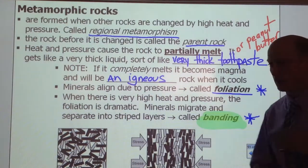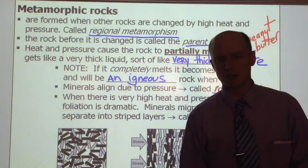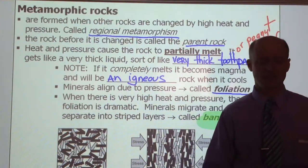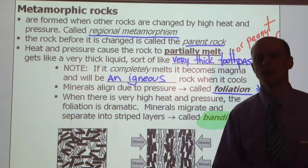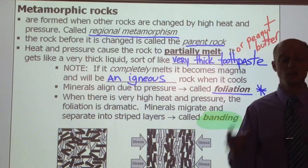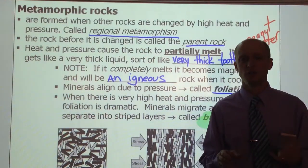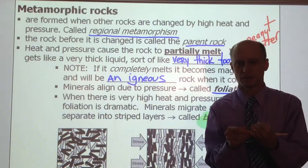So metamorphic rocks form when a rock that already exists gets changed — that's what the word metamorphism means. It usually happens due to heat, and usually heat and pressure go together.